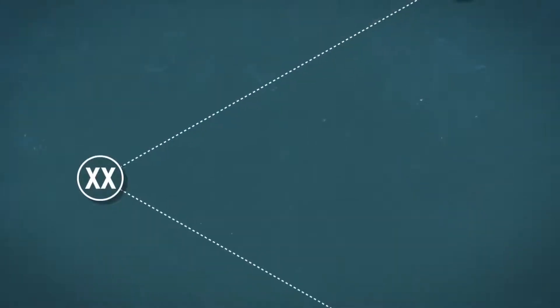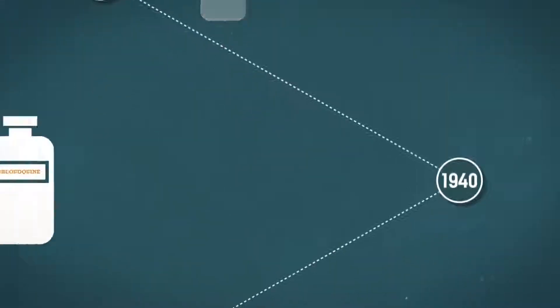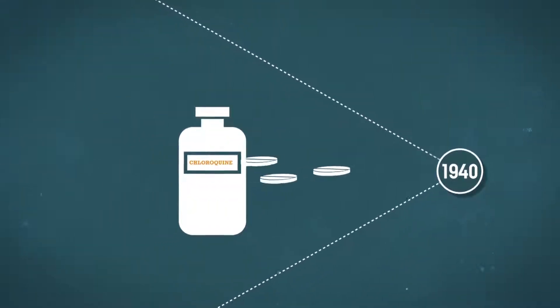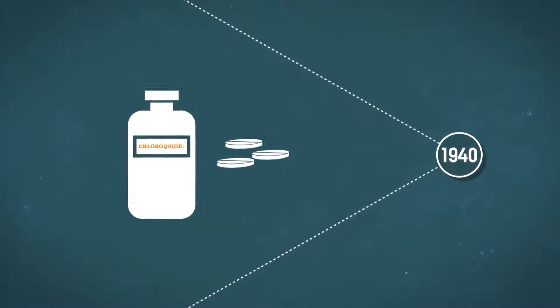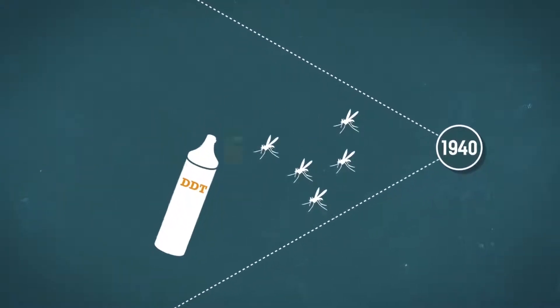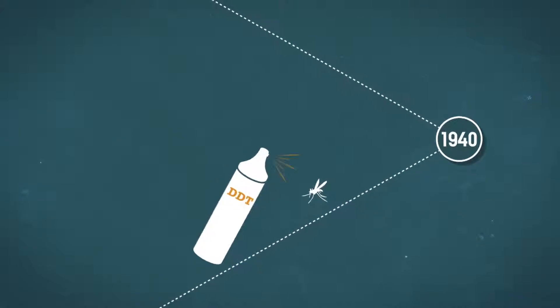Until the 20th century, quinine was the only antimalarial drug. Chloroquine and other synthetic antimalarials arrived at the beginning of the 1940s. At the same time, insecticides such as DDT were being sprayed extensively to eradicate Anopheles.